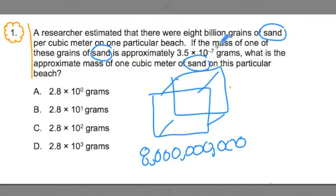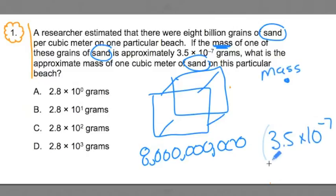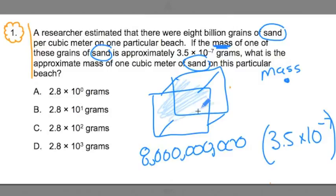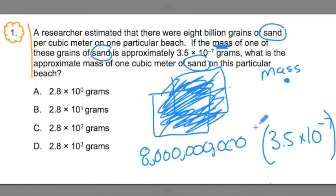The second sentence says that the mass of one of those grains of sand — just one of those little grains — has a mass of 3.5 times 10 to the negative 7th. That's really tiny. So we've got a lot of grains of sand in the box but a very, very tiny mass. And the question is: approximately what is the mass of all those grains of sand in this box? So we're trying to find the total mass, knowing each grain has a mass of 3.5 times 10 to the negative 7th.